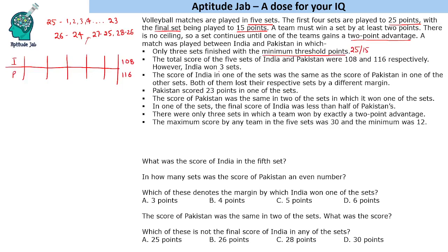However, India won 3 sets — so although India has a lower total, India won 3 sets. The score of India in one of the 5 sets was the same as the score of Pakistan in one of the other sets, and both of them lost their respective sets by different margins.